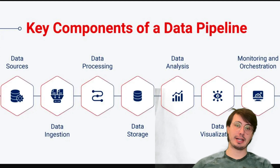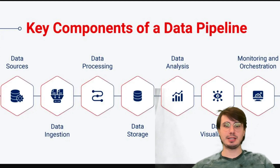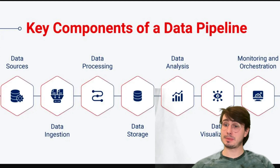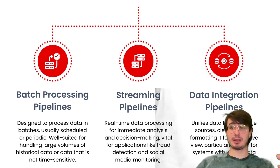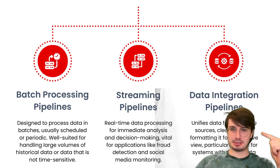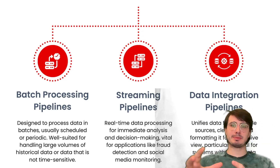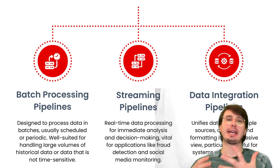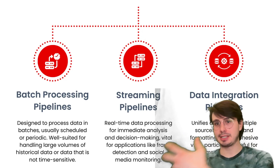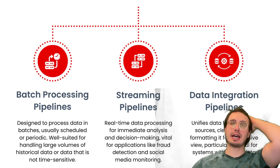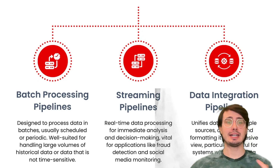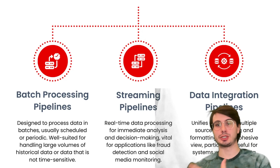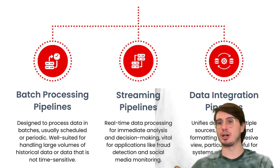Now that we know the different steps and components of a data pipeline, let's talk about what are the different types of data pipelines. In my view, there are really three main types: batch processing pipelines, streaming pipelines, and data integration pipelines. Batch processing pipelines are the typical approach — take a data set, apply some transformations and rules, upload it into a database, and then use that data for some downstream purpose, whether that's AI, ML, or data analytics.